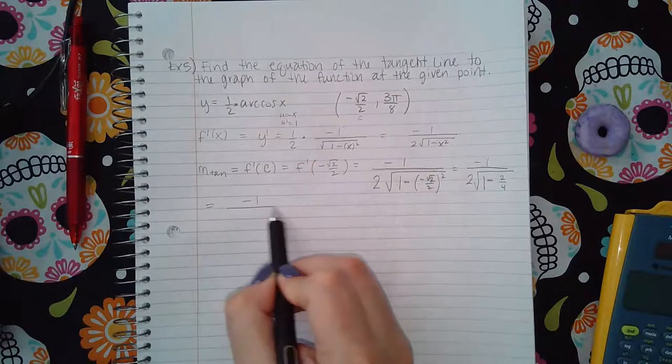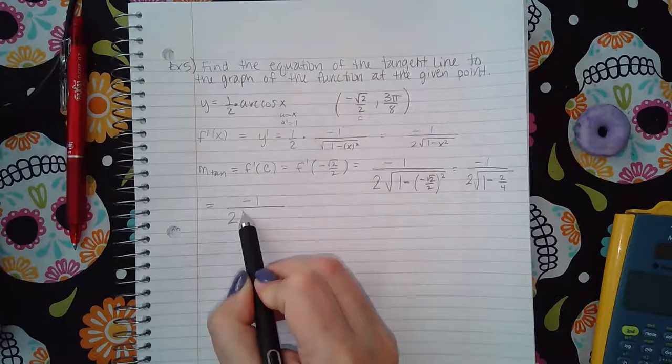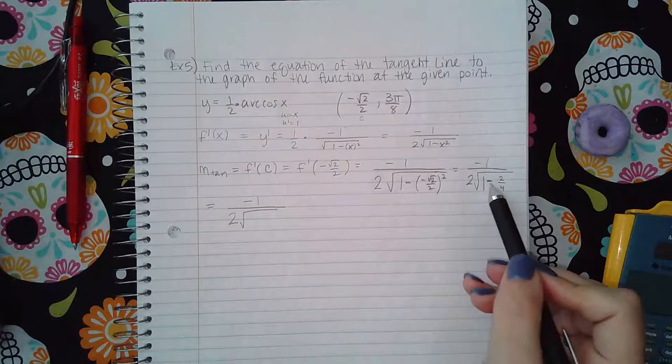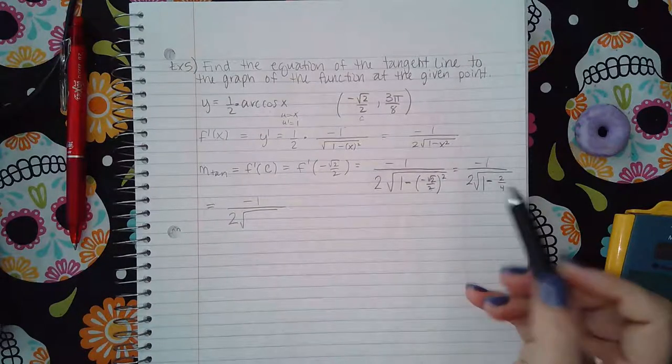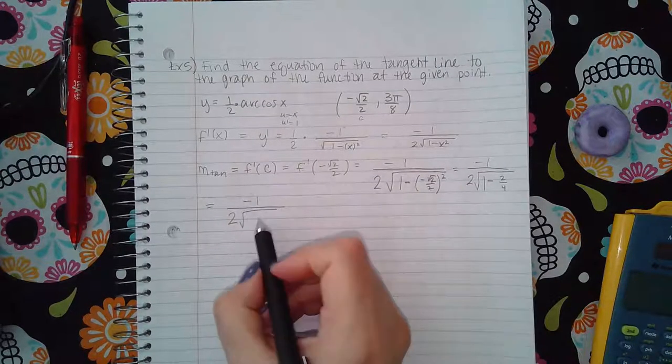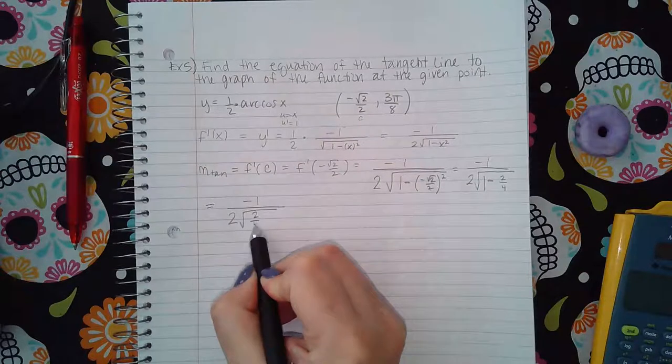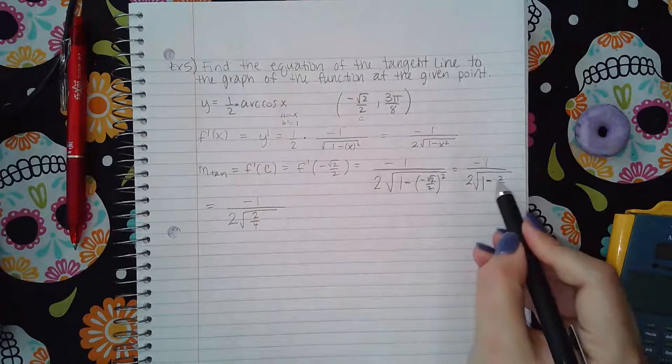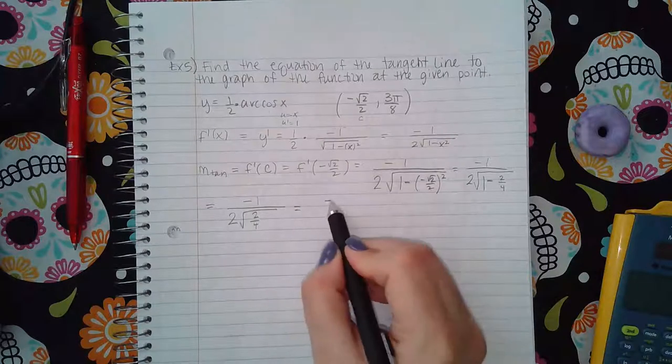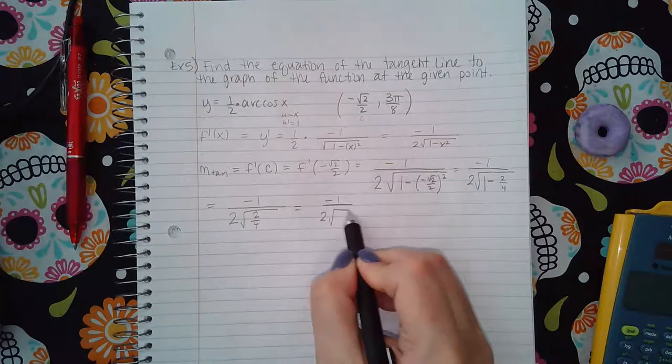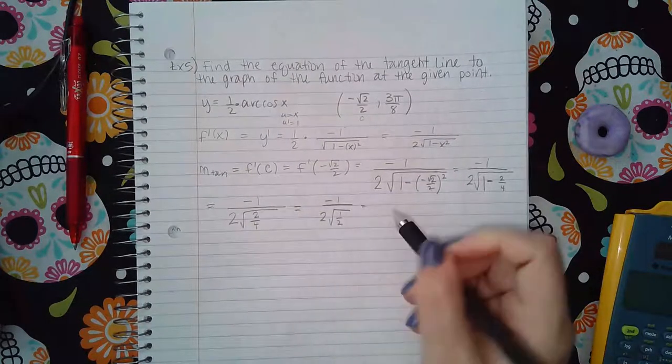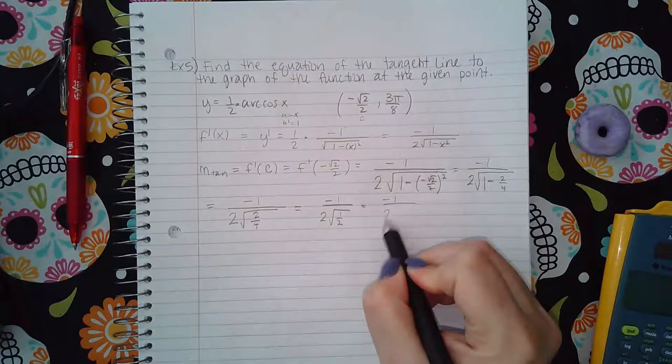One minus negative is a negative, it's going to be a positive, but this negative is the negative I wrote there. And then the square root of two squared is just two, and two squared is four. So that is equal to negative one over two times the square root.